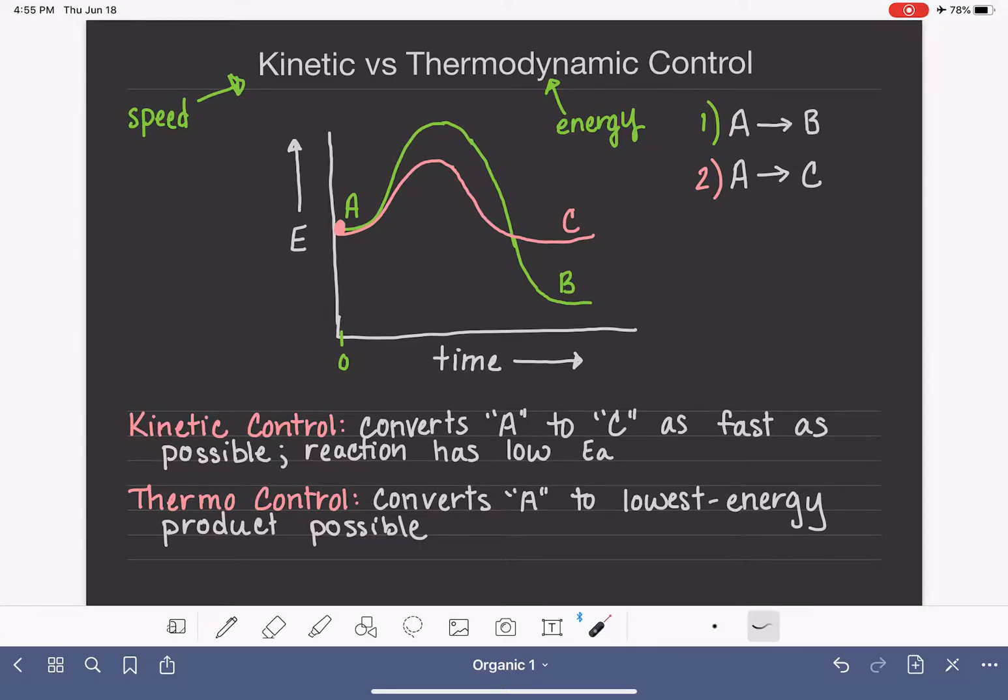So if we have reactant A and we know that one option would be to turn it into C and another option would be to turn it into B, when we are converting A into our low energy product B, then we are running that reaction under thermodynamic control. And this is just based off of the energy of the products of the reaction.